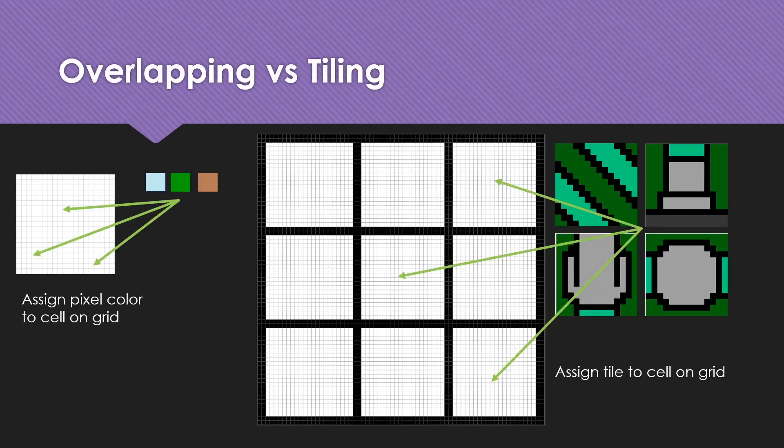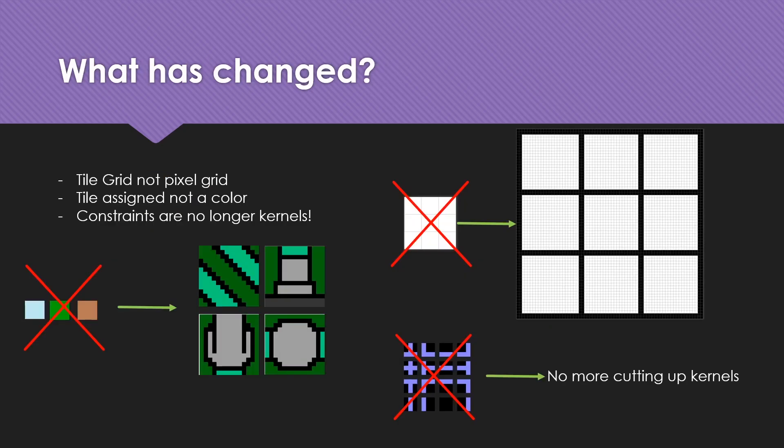In the first case, we used to assign a color to any pixel location. Now, we are assigning a block of colors as a tile to each tile location in the output image. What has changed is: we are no longer in a pixel grid, we are in a tile grid. We are no longer assigning colors, we are assigning tiles.